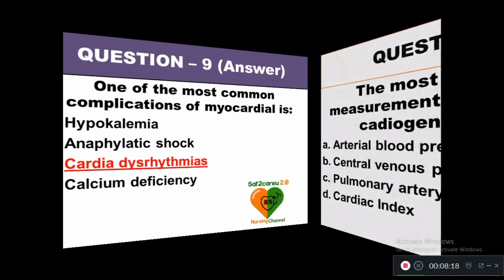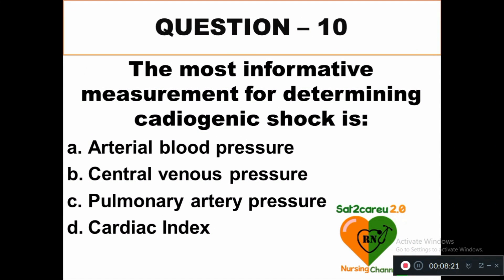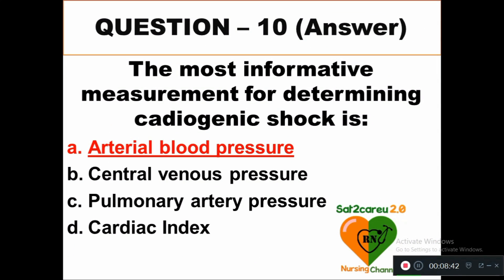Question 10: The most informative measurement for determining cardiogenic shock is: option A arterial blood pressure, option B central venous pressure, option C pulmonary artery pressure, option D cardiac index. The correct answer is A — arterial blood pressure. The rationale for all these answers is given in the description box. If you want the rationale in PDF, you can join our WhatsApp group.